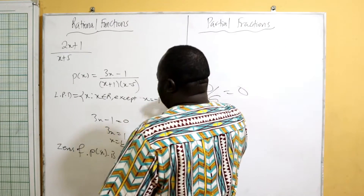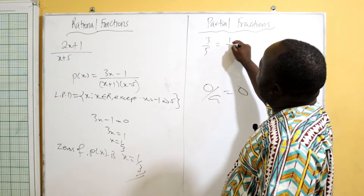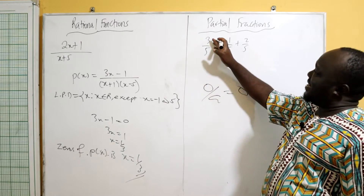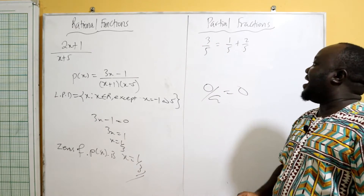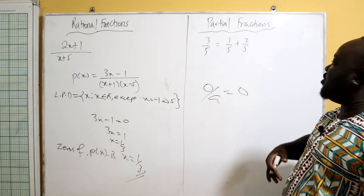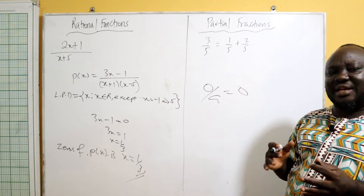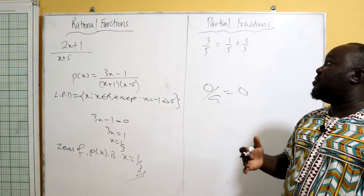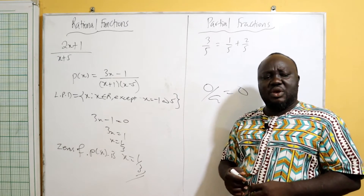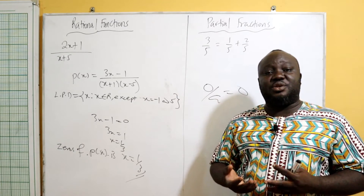When we talk about partial fractions, a simple idea: if I have three over five, I can write it as one over five plus two over five. These are the same — I can express three over five as the simpler sum one over five plus two over five. Being able to express a polynomial fraction as a combination or addition of two simpler fractions, which are also polynomials, means we've expressed it as partial fractions.